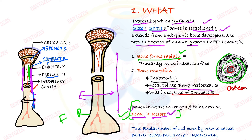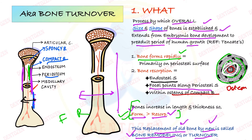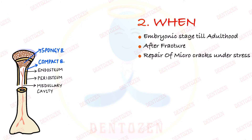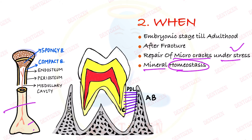This replacement of old bone by new bone is called bone remodeling or bone turnover — another name for bone remodeling. It happens during the growth phase, after fracture, for the repair of small micro-cracks which arise under stress, and for mineral homeostasis — the balance of minerals in the body — where hormones can act on bone, remove minerals, and cause remodeling.